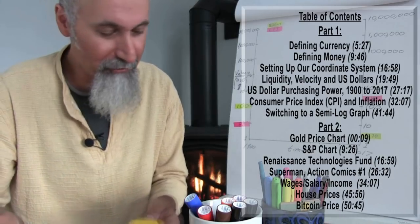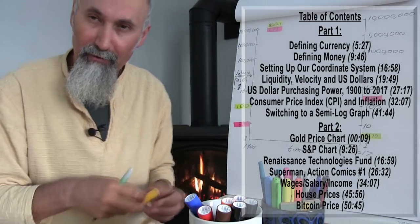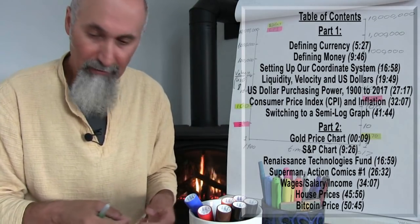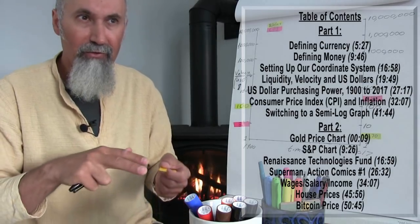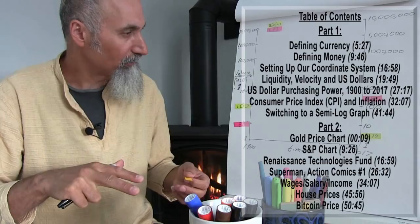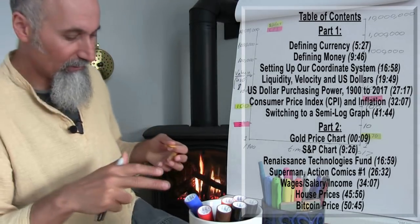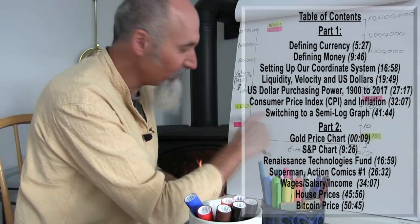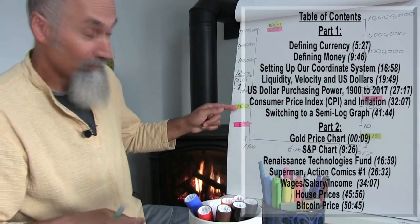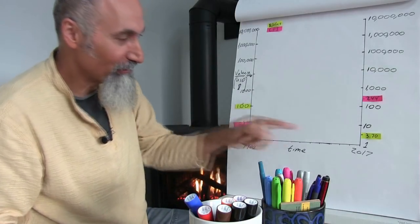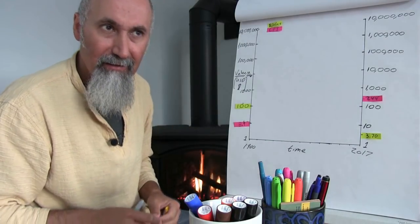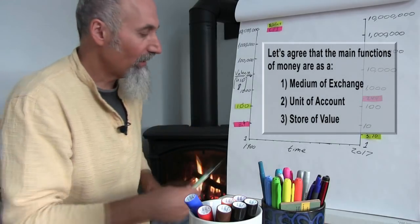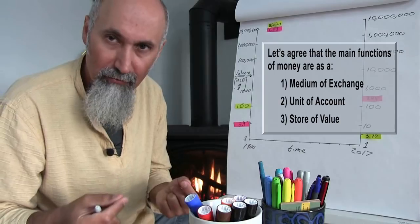We're going to measure gold by putting the price of gold up here, because a lot of people consider the price of gold to be a valid measure of preserving wealth and preventing your money from depreciating. When the US dollar goes from $100 to $3.70, that's a currency, not money, because one of the things money has to be is a good store of value, and currency is not a good store of value.